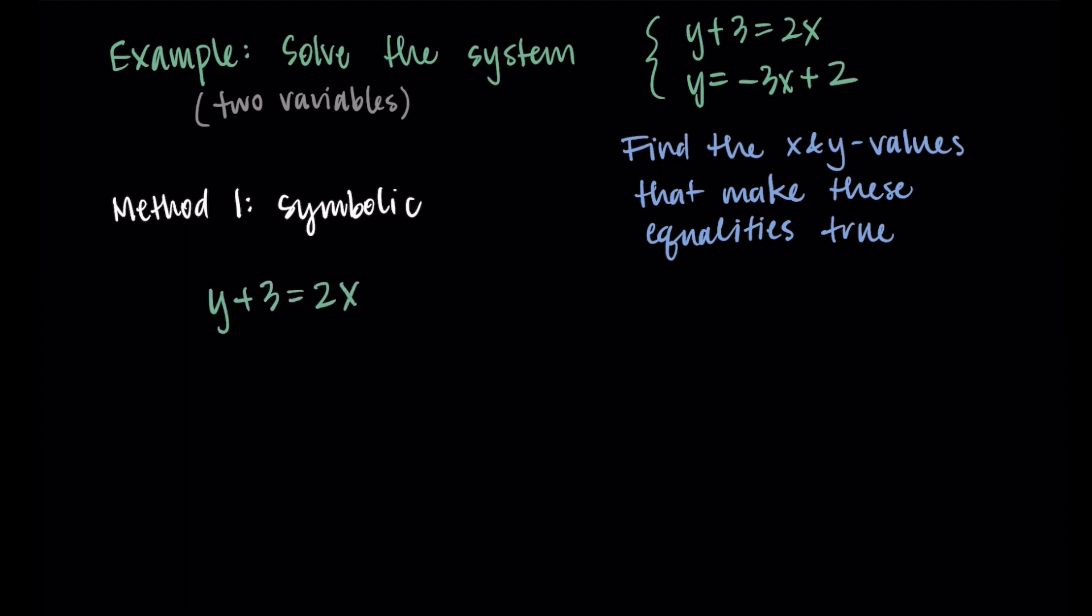Looking at our system, I see in the second equation, I'm told that Y equals negative three X plus two. This means that I can replace Y in my first equation with that negative three X plus two. So we're going to substitute for Y. Using that Y plus three, I'm going to replace the Y with negative three X plus two, then I have my plus three equals two X.